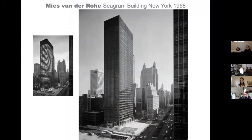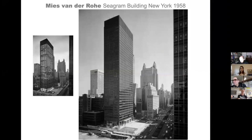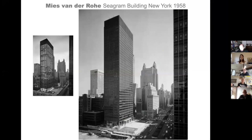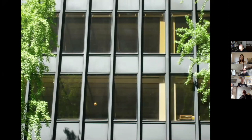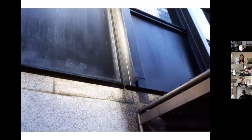Now Mies van der Rohe is next on my list. Mies went to America. When he was younger, he said that everything a young architect needed to know could be found in Schinkel's Altes Museum. But when he went to America, where there was a completely different business typology, he did something miraculous. He understood that the steel I-section was intrinsically American, and that the facade would be repetitious. Somehow he was able to present the I-section — this is a bronze I-section — as if it were as significant as a Greek column.